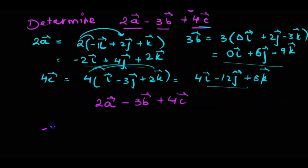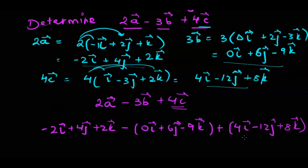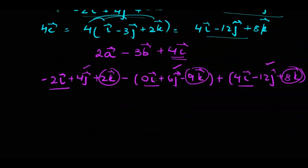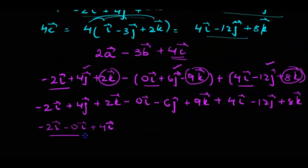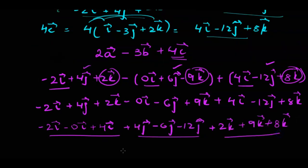This is what we're supposed to solve. 2a is minus 2i plus 4j plus 2k minus 3b is 0i plus 6j minus 9k and plus 4c is 4i minus 12j plus 8k. We are always supposed to collect our like terms. So i, i and i together. Similarly j, j, j we'll put together and k values we'll put together. But before doing that we'll work with this sign first. Here we have collected the i values. Here we have collected the j values and here we've collected all the k values.